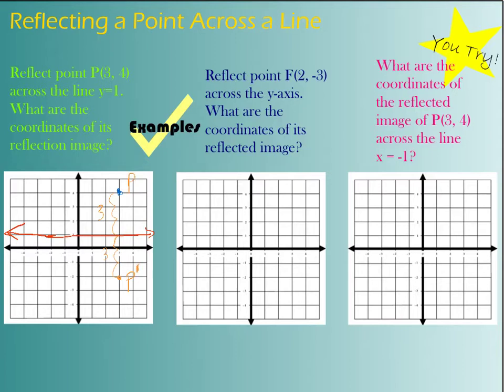Okay, so let's look at another example. I've got point F, which is at coordinates 2, 3. That's point F. And I am reflecting over the Y axis. My Y axis is this line right here.